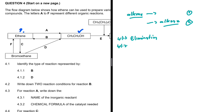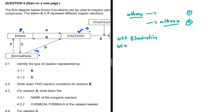For 4.1.2, identify the type of reaction represented by D. Does it start with an alkene? No — bromoethane is not an alkene. Does it end with an alkene? No — it ends with an alcohol. Since neither the first nor the second condition is met, it is a substitution reaction. That is 4.1.2.